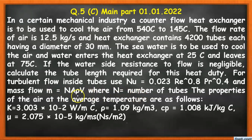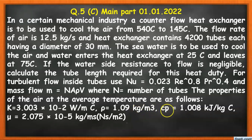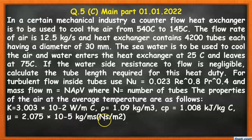The properties of air at the average temperature are: thermal conductivity k = 3.003 × 10⁻² W/m°C, density ρ = 1.09 kg/m³, specific heat Cp = 1.008 kJ/kg·K, and dynamic viscosity μ = 2.075 × 10⁻⁵ kg/m·s (or N·s/m²).